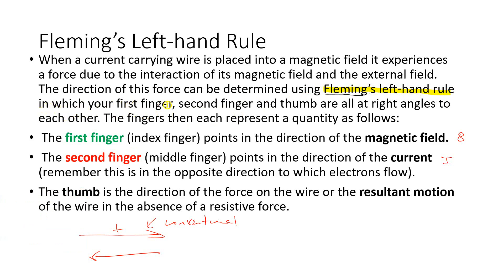Fleming's left-hand rule uses the first finger, second finger, and thumb, which are at right angles to each other. The first finger is your pointing finger — your index finger — and that first finger is denoted as your magnetic field. So wherever your first finger points, that is telling you the magnetic field, specifically the magnetic field from the external source, meaning the field from the magnet. We can denote it as the B finger.